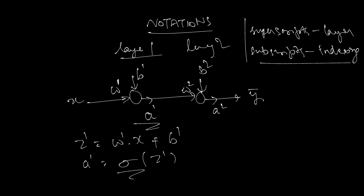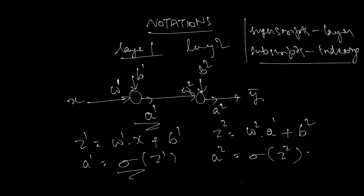To find the output a2 of the second neuron, we write z2 = w2 * a1 + b2, where the input to this neuron is actually a1 — the output of the previous neuron. So a2 = σ(z2). Since this is the output of the last layer, a2 is equal to our output y-bar.